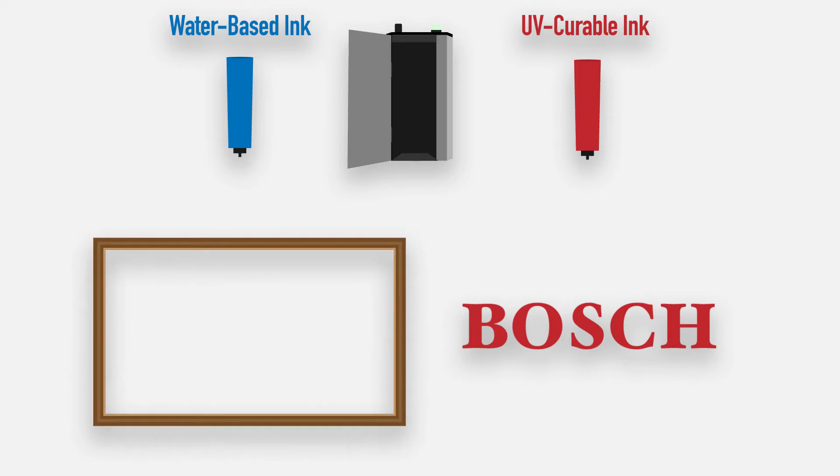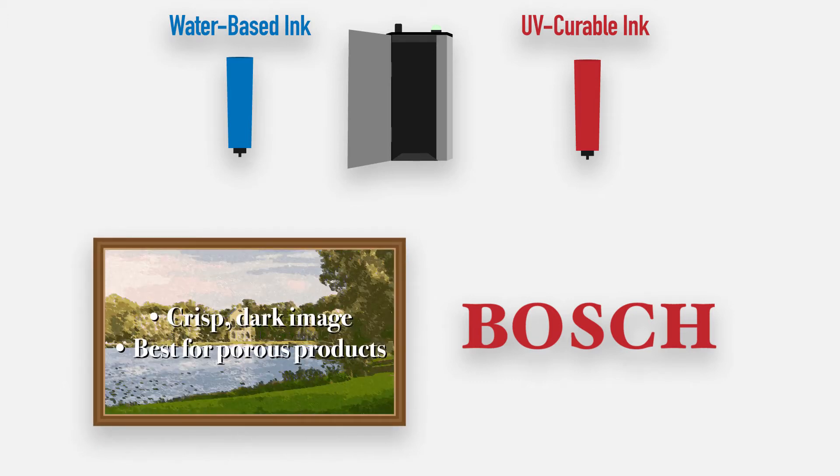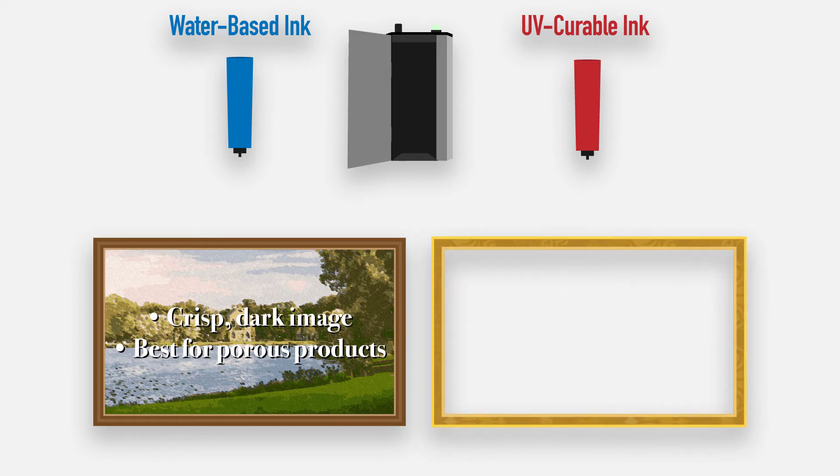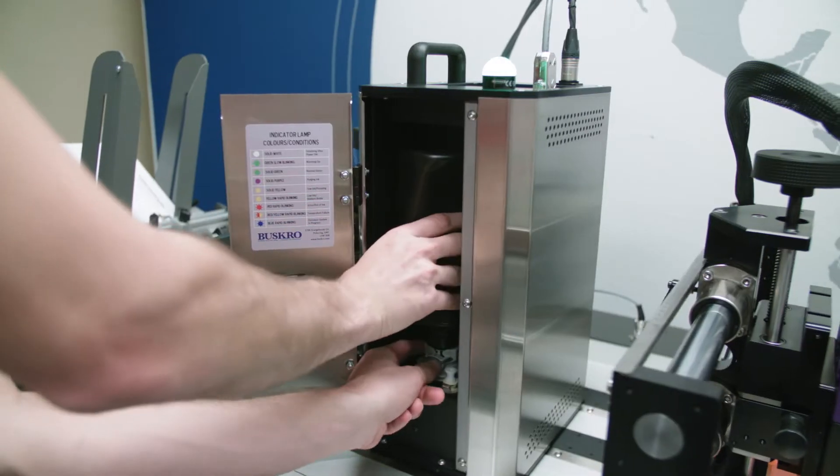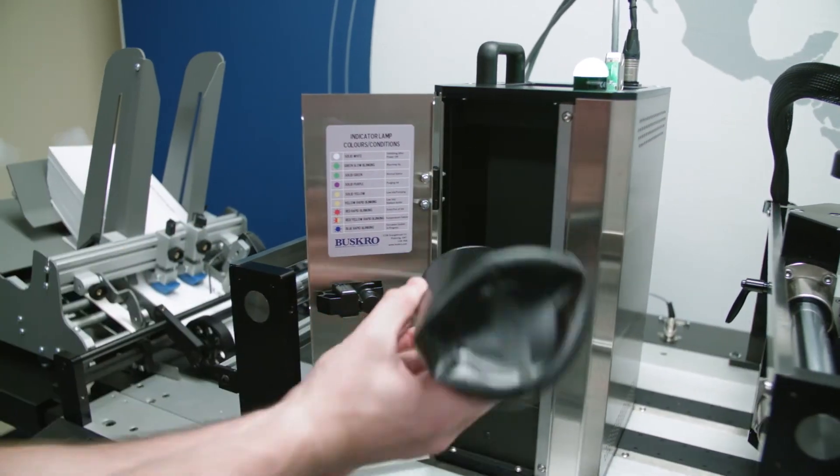The water-based inks produce an extremely crisp, dark image on porous products, while the UV LED-friendly inks work on virtually any substrate and can give you the assurance that any job that comes in, you can print on. Our Quantum inks come in a one-liter quick disconnect bottle, very easy to change at any time during the printing process.